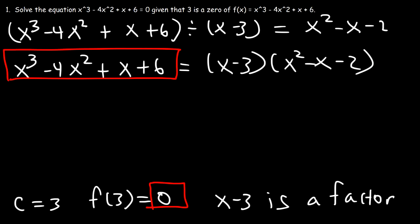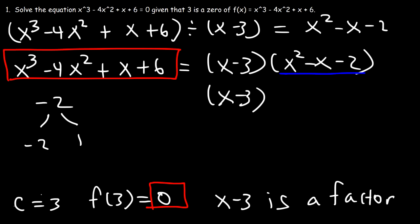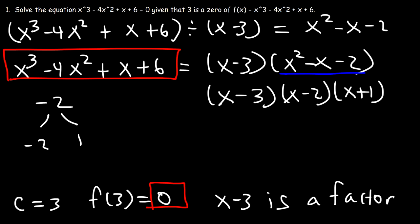Now we need to completely factor this expression by factoring the quadratic trinomial x² minus x minus 2. We need two numbers that multiply to negative 2 and add to negative 1 — that's negative 2 and 1. So the fully factored form is x minus 3, times x minus 2, times x plus 1.